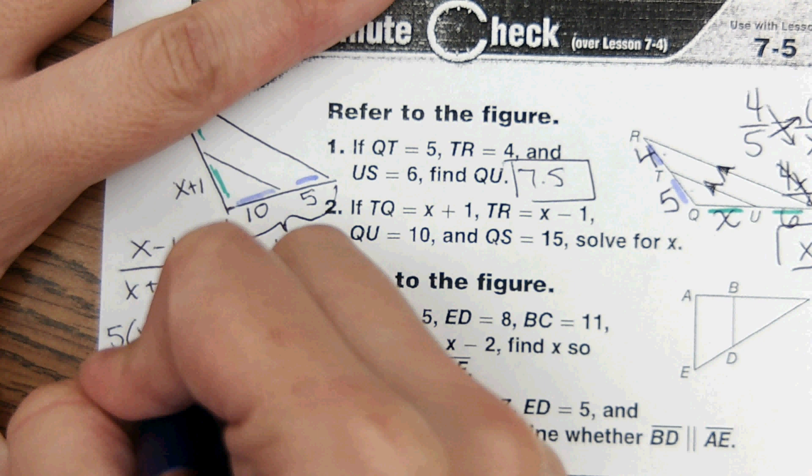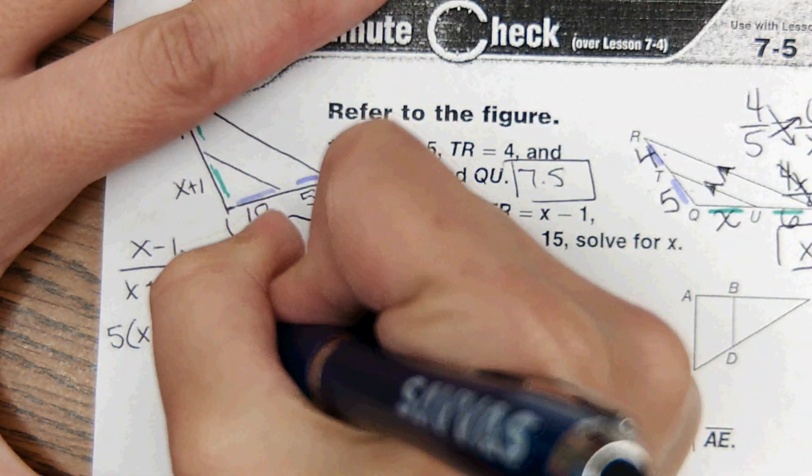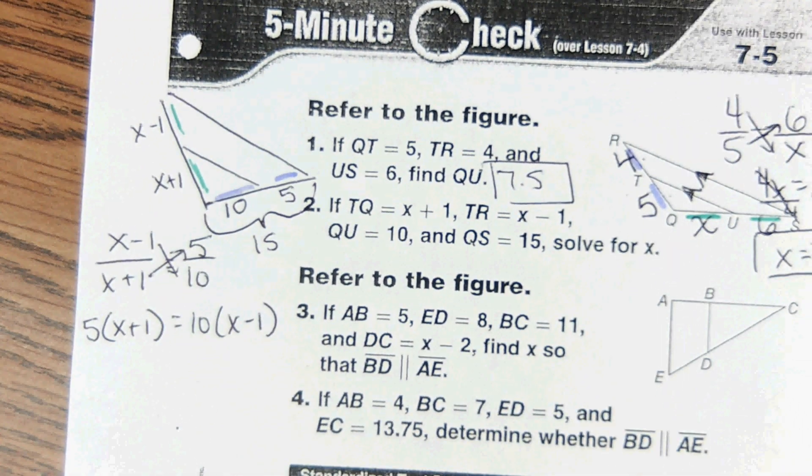And then we'll cross multiply. Here's where people get stuck of course, but it looks like this: five times x plus one like this and 10 times x minus one.